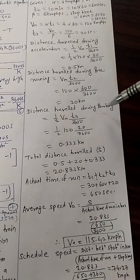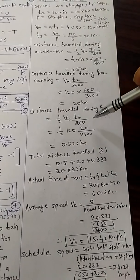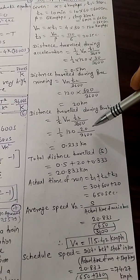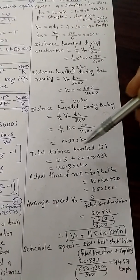Now third one, distance travelled during braking. Again it is a triangle for retardation, half Vm T3 upon 3600. So once you solve this you will get 0.33 answer, that is in kilometers.